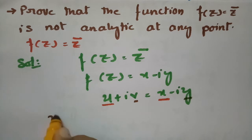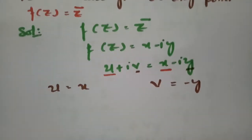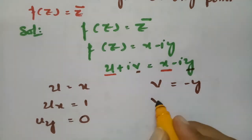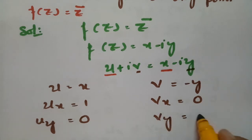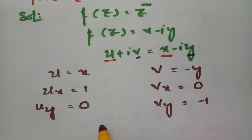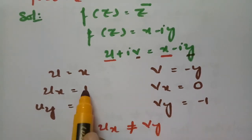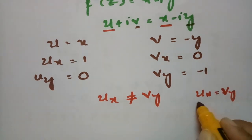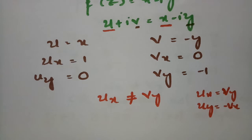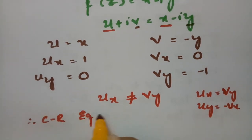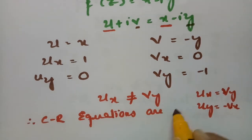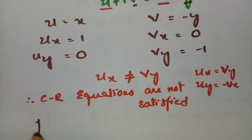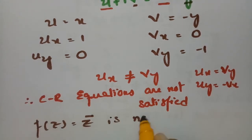So u = x and v = −y. Differentiating: ux = 1, uy = 0, vx = 0, vy = −1. We can easily see that ux ≠ vy. The CR equations require ux = vy and uy = −vx. Since the CR equations are not satisfied, f(z) = z̄ is not analytic.